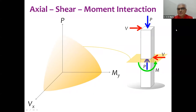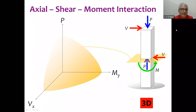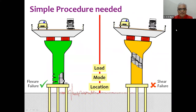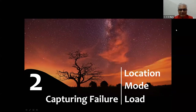The picture shows only two quantities: moment about the y-axis and shear along the x-axis. But in a three-dimensional member there will also be M_x and V_y in the perpendicular direction, which will be discussed at another point. We need a simple procedure that can tell us the failure load, the failure mode, and the failure location — capturing all three will be our focus today.